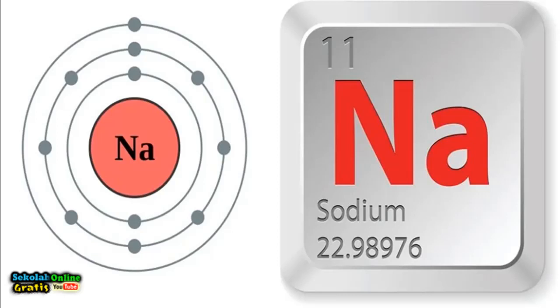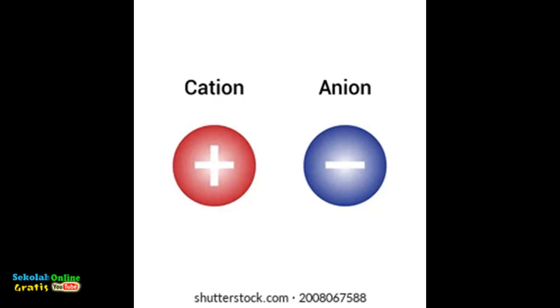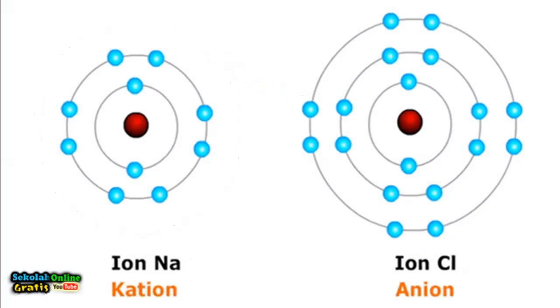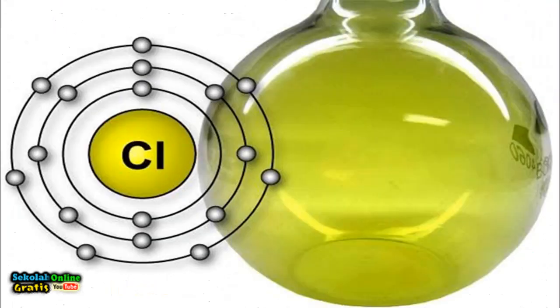For example chlorine has an atomic number of 17 so its electron configurations are 2, 8, 7. Because the outermost electron is 7 chlorine gains one electron to make it stable. Thus chlorine becomes a negatively charged chlorine ion or can be written Cl to the minus power because it captures one electron and is referred to as an anion.